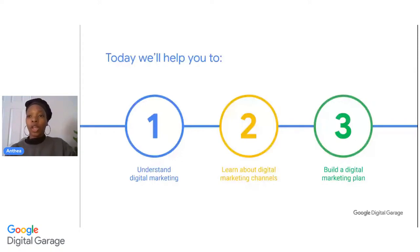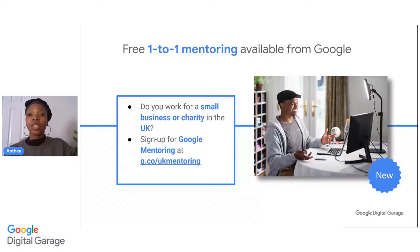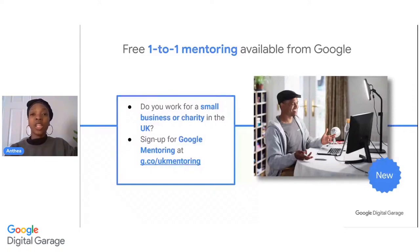We hope that you find this webinar helpful today. We also want to let you know that if you work for a small business or a charity in the UK, you can now sign up for a free one-to-one mentoring session from Google. This is absolutely free and can help you on a one-to-one basis on a range of different digital skills — from building a strategy all the way to finding more customers online. You can sign up and book a session at g.co/UKmentoring and a link will be posted in the chat for you.